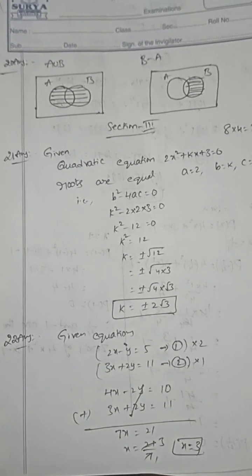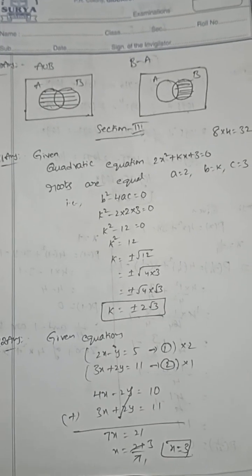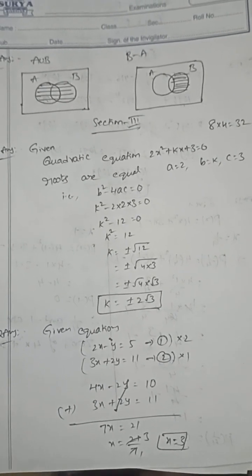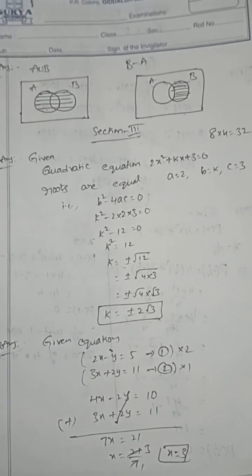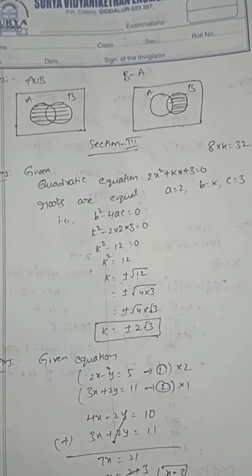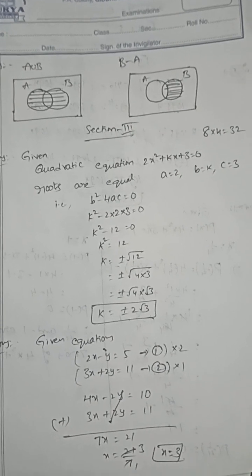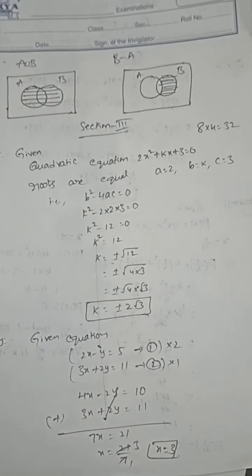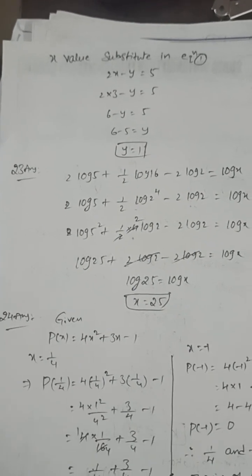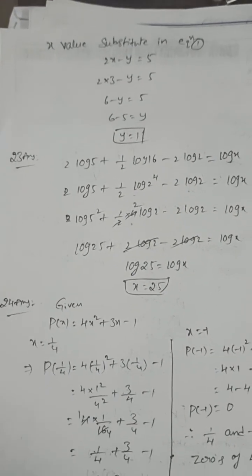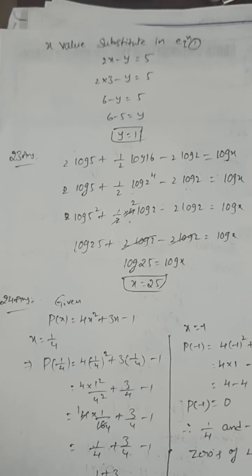Solve by elimination method: 2x - y = 5, 3x + 2y = 11. To eliminate y variable, multiply first equation by 2, second equation by 1. Then x = 3. Substitute x value in equation 1, then y = 1.